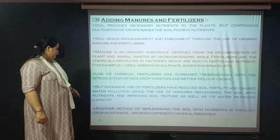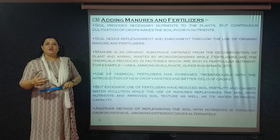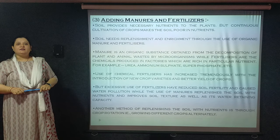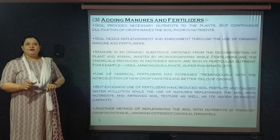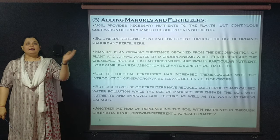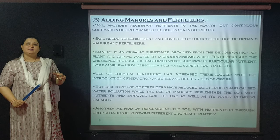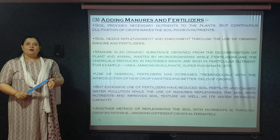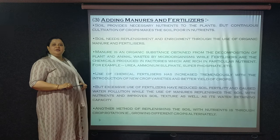Another method the farmer can follow is to rotate the crops. After growing wheat once, the next season he can grow a pulse or leguminous plant. Legumes have rhizobium bacteria on their roots that fix atmospheric nitrogen into the soil. So if wheat is grown one season and a leguminous plant is grown the next, that soil will get nitrogen fixed naturally. By rotating the crops, the soil replenishes its nutrients naturally.